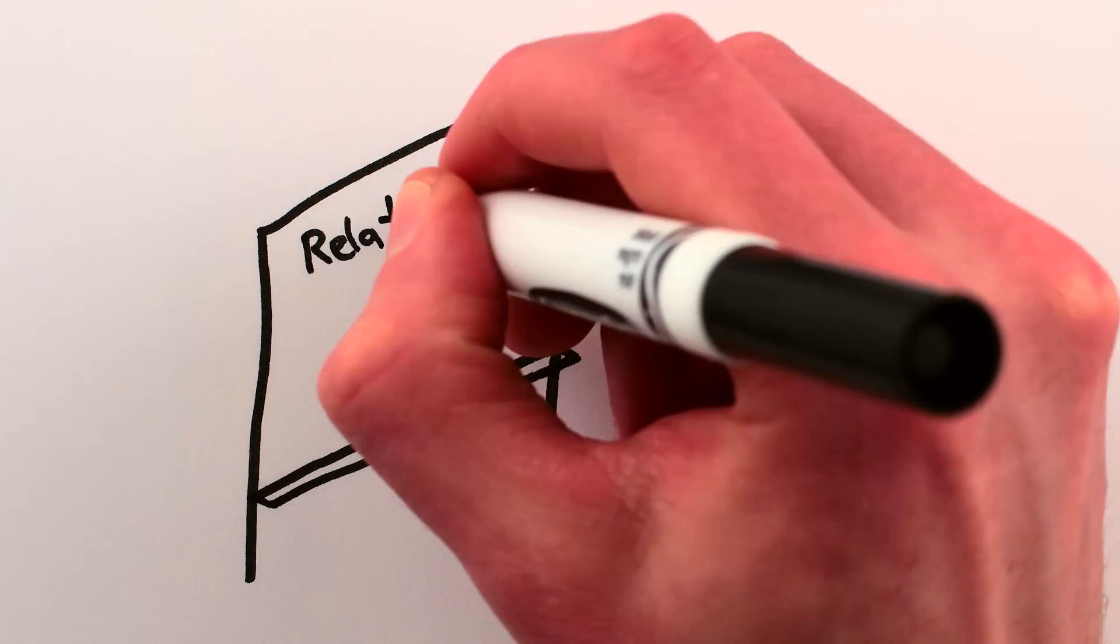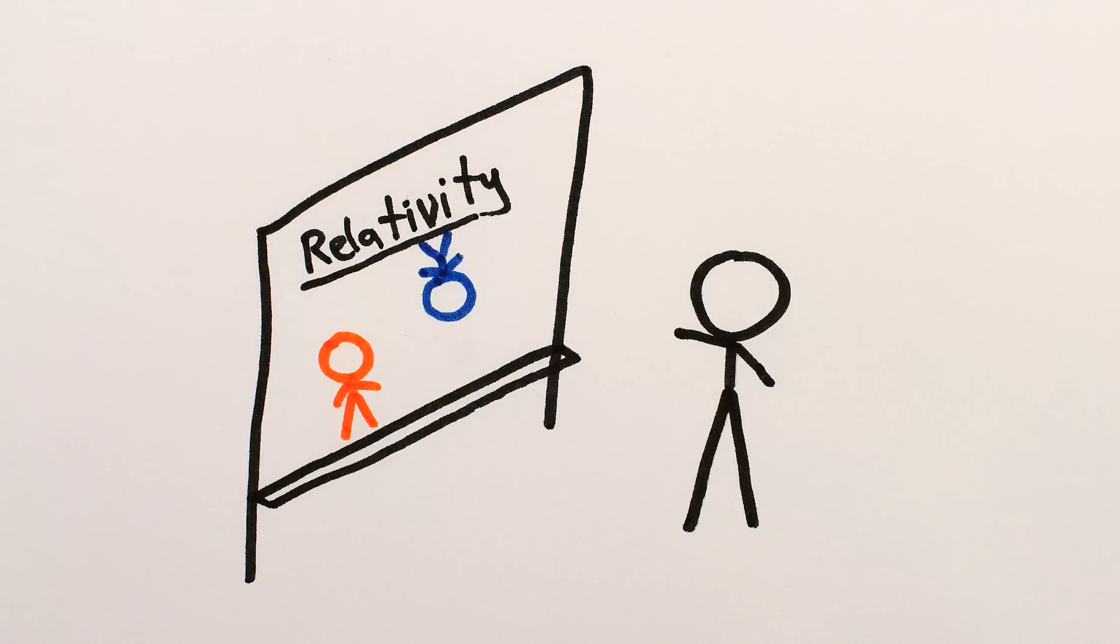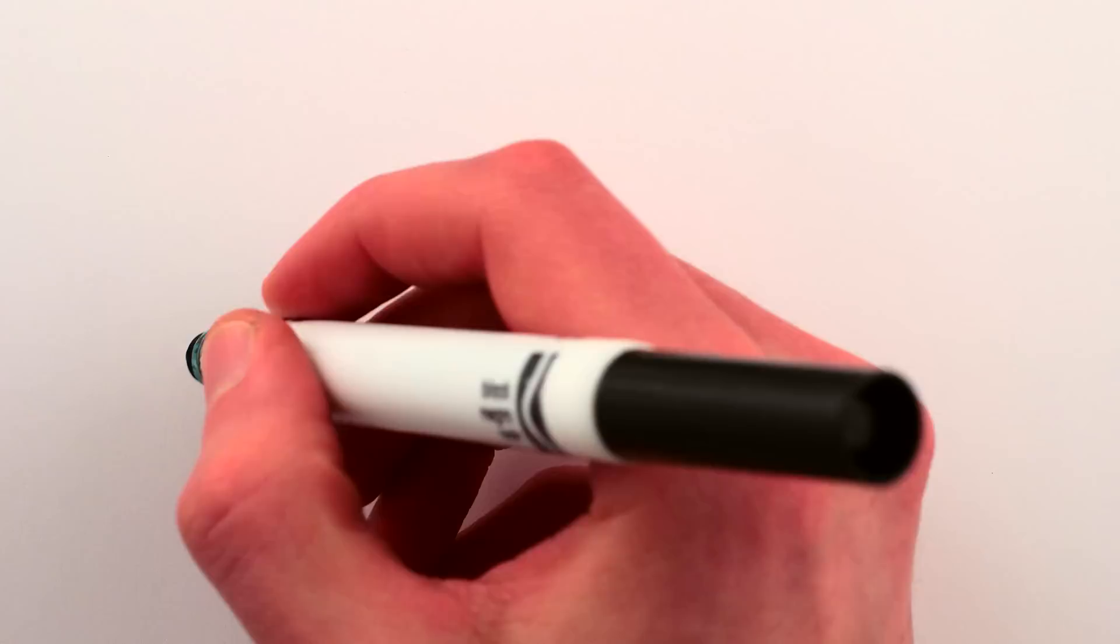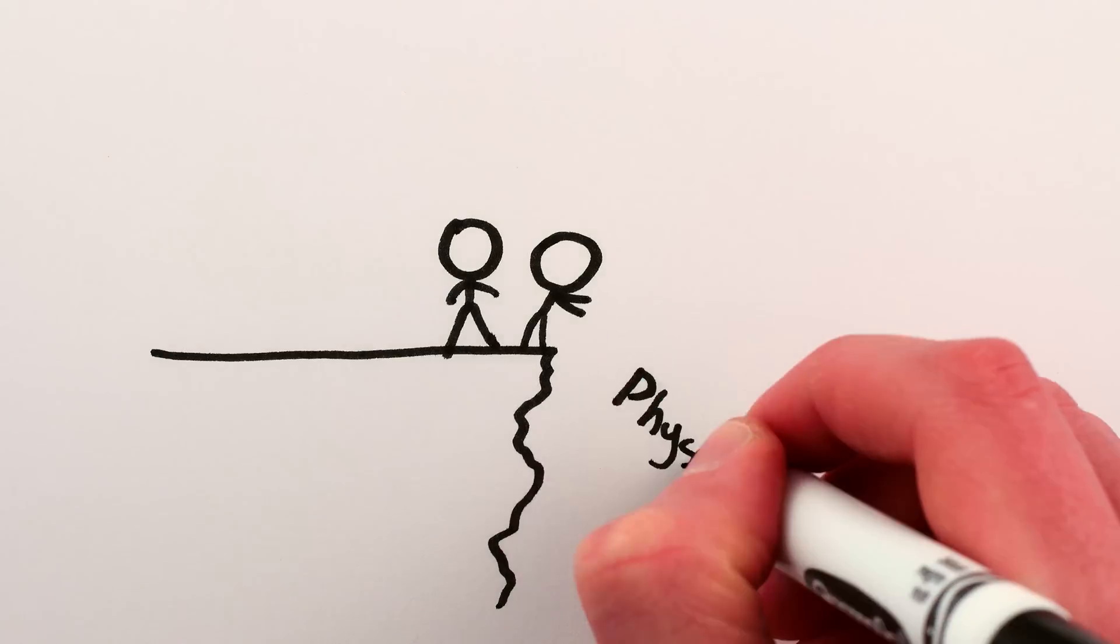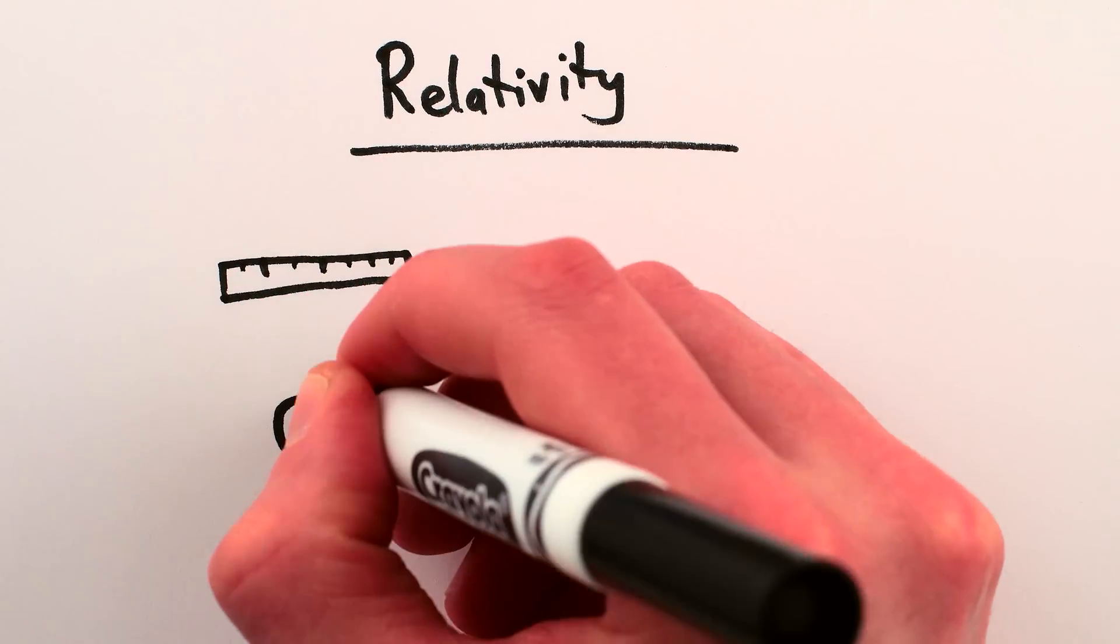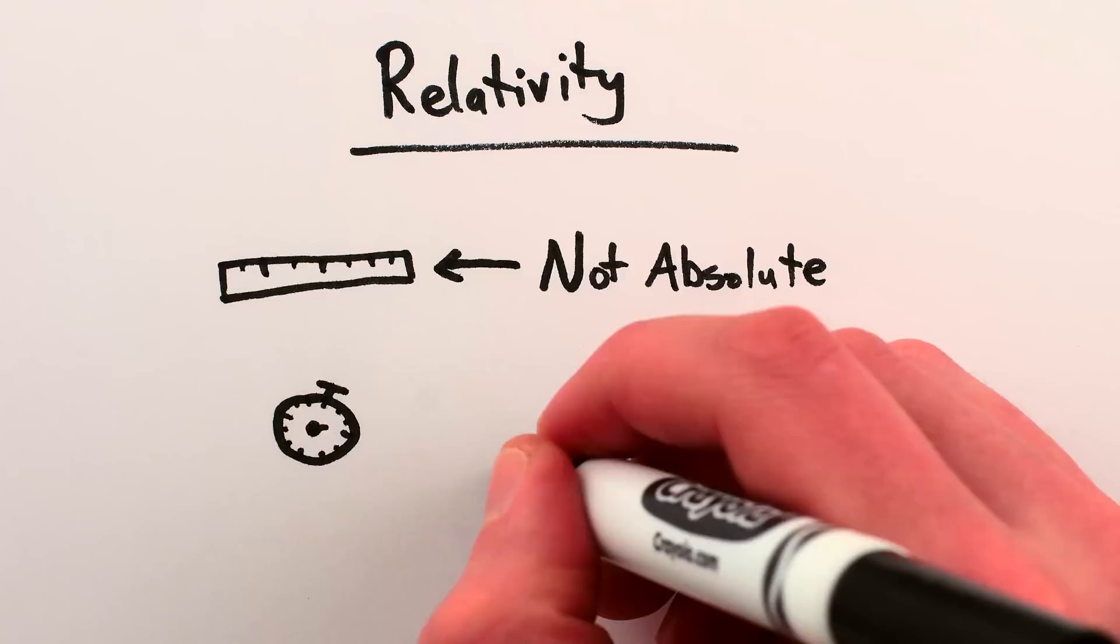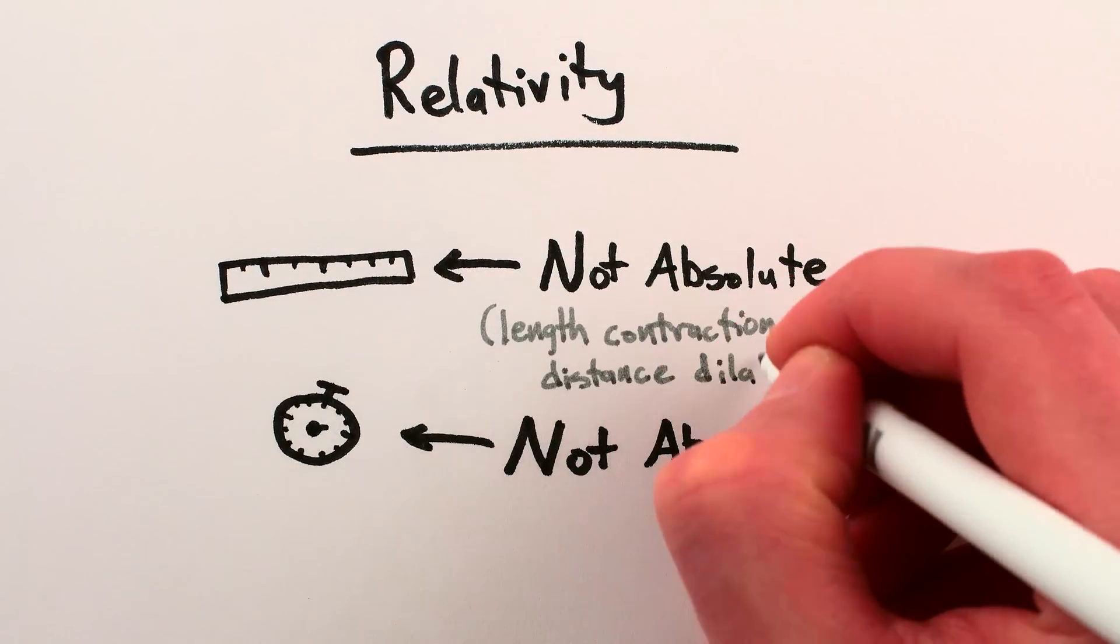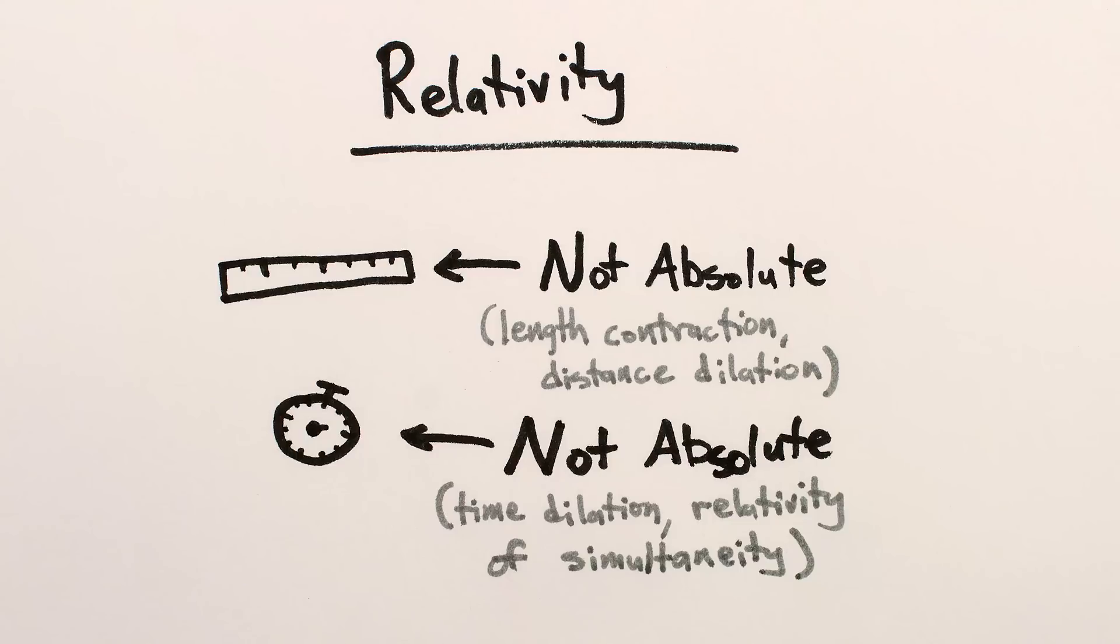I started this series saying that relativity is about understanding how things look from different perspectives, and in particular, understanding what does and doesn't look different. And at this point, you'd be justified to feel like we've kind of just trashed a bunch of the foundational concepts of physical reality. We've shown how our perceptions of lengths and spatial distances, time intervals, the notion of simultaneous events, and so on, are not absolute. They're different when viewed from different moving perspectives, and so aren't universal truths.